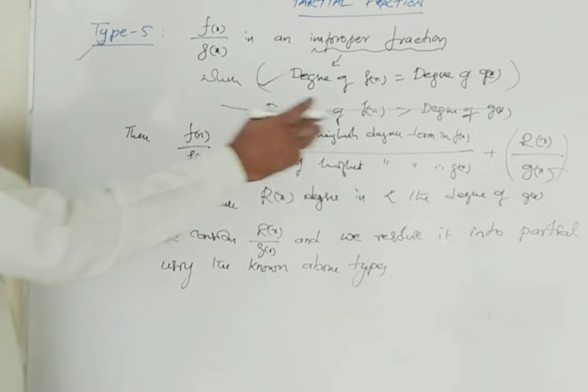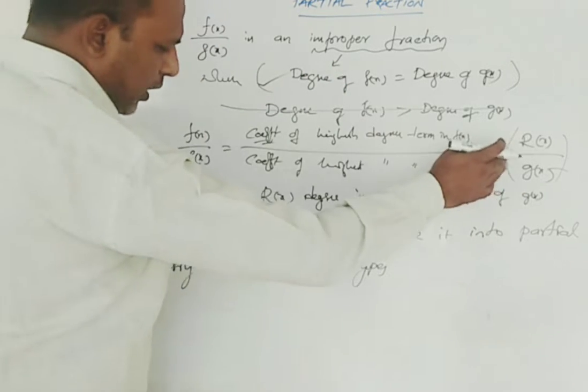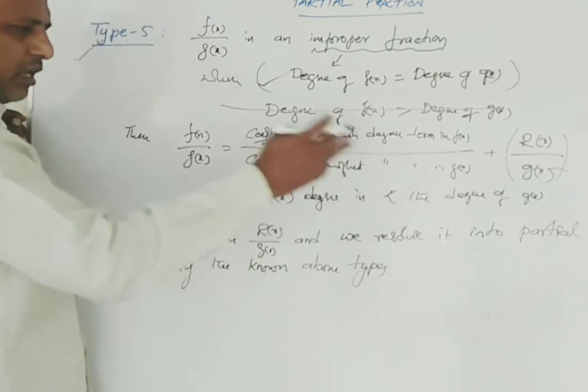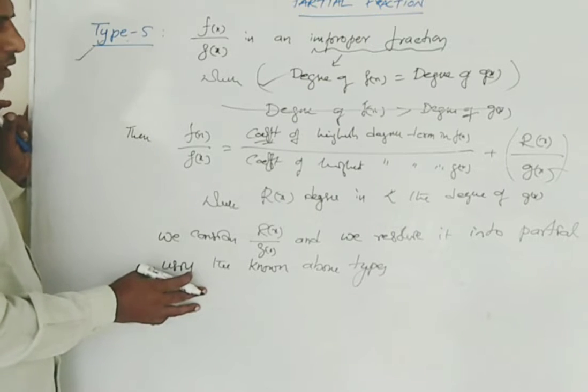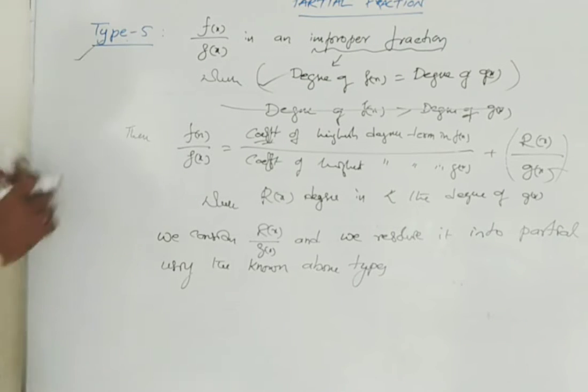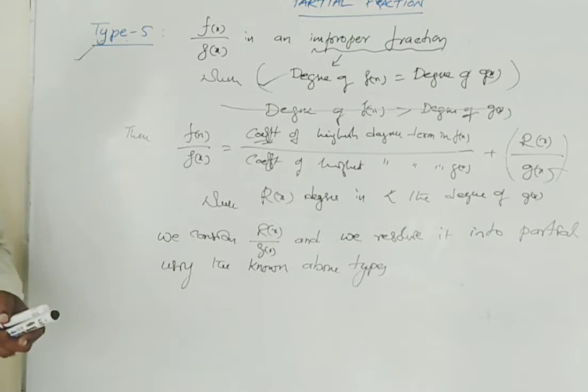Using types 1, 2, 3, and 4, you can resolve it into partial fractions. So there is Type 5. Let us look at an example.